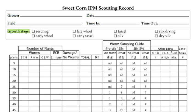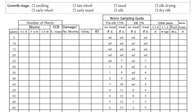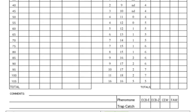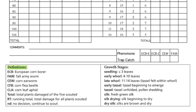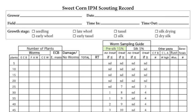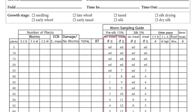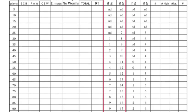You will then select the growth stage of the corn. The growth stage will determine the threshold used while scouting. Definitions of growth stage can be found at the bottom of the form, as well as definitions for other abbreviations used on this form. Depending on whether the field you are scouting is pre-silk or silking will dictate whether to use a 15% threshold or a 5% threshold and the associated columns to use in making a management decision.